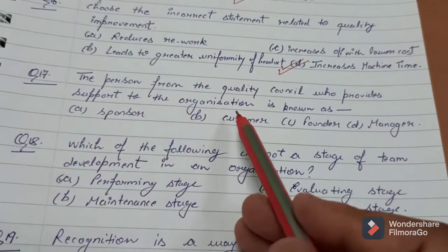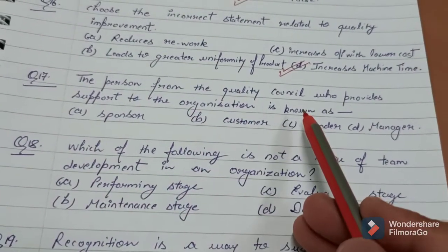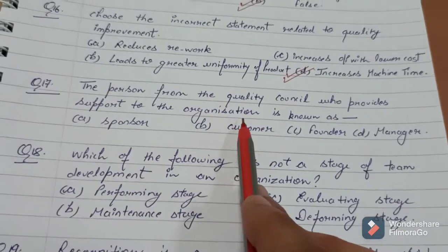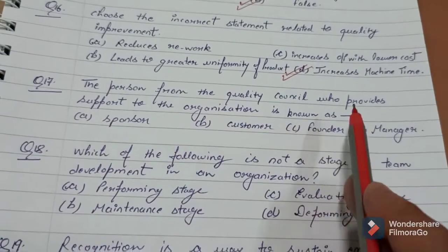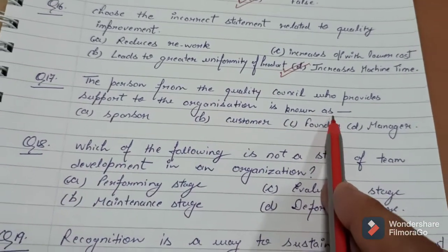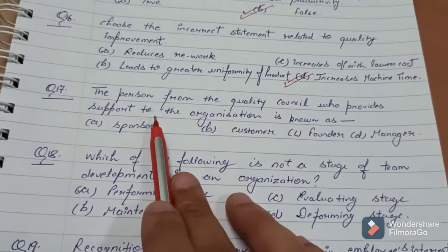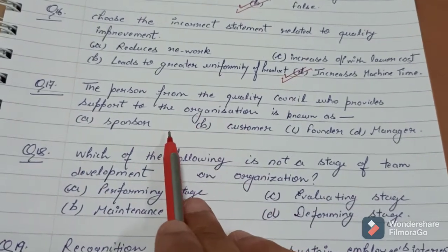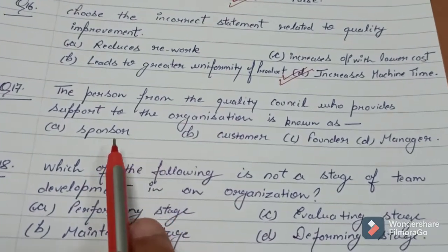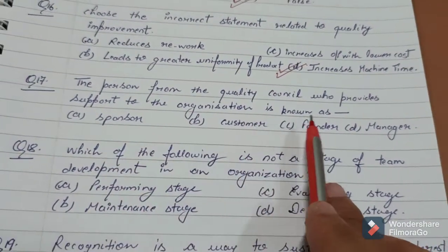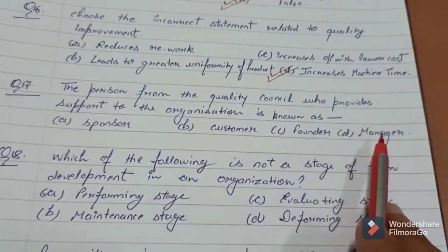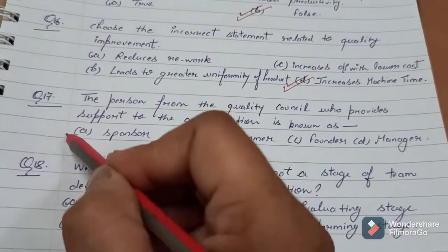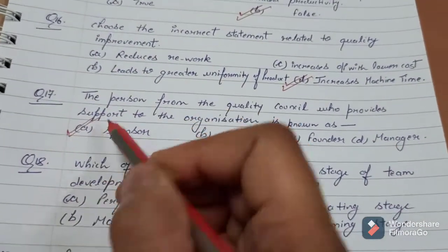Question number 17: The person from the quality council who provides support to the organization — quality council se jo person organization ko support provide kare — that is called as: sponsor, customer, founder, or manager? The answer is sponsor.